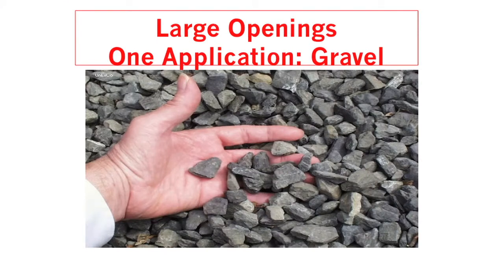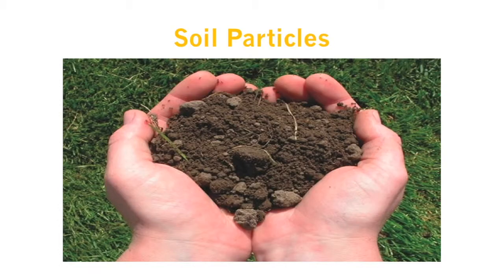The producers of gravel for the construction industry use sizes that range from larger openings such as 3 inches down to 1½ inch. Moving on to soil sampling analysis, soil sampling specifications regularly call for sieve ranges from 2.8 millimeters on number 17 to 1 millimeter on number 18.